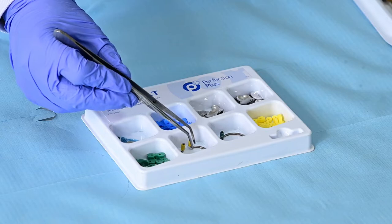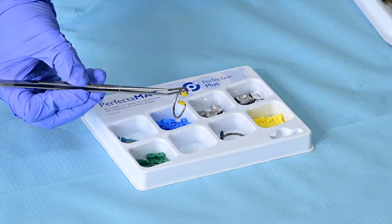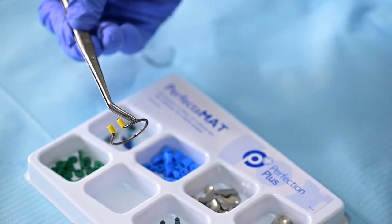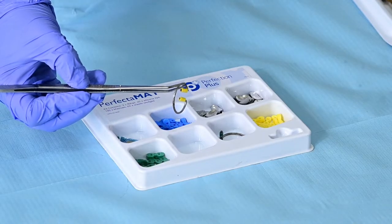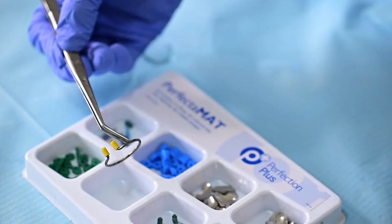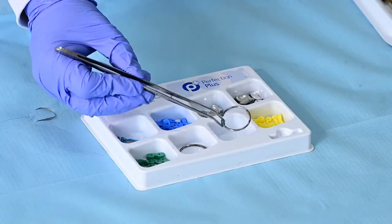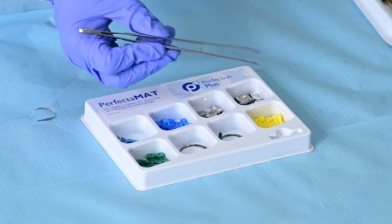And then we have the ring. The ring is supposed to adapt interdentally, buccally and lingually or palatally to secure the sectional matrix. We shall be demonstrating that. And they come in like this is good for the premolar and this is a bit wider. This is for the molar. We had already introduced this as the smallest elastic wedges.